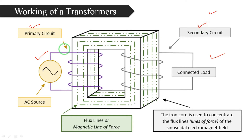What do you mean by a primary circuit? Primary circuit means the one which is connected to the source — that is called the primary circuit. First of all, we will revise the construction of a transformer.